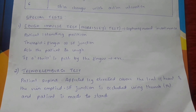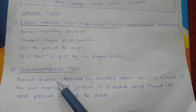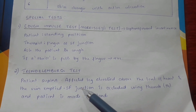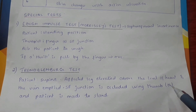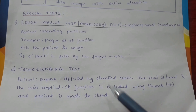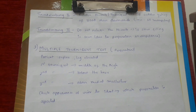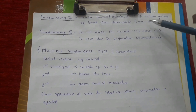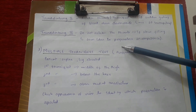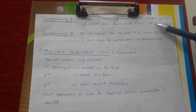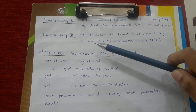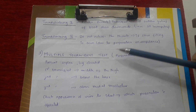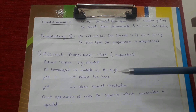The Trendelenburg test: the patient lies in a supine position, the affected leg is elevated above the level of the heart so the vein is emptied, and the saphenofemoral junction is occluded using the therapist's thumb; then the patient is made to stand. Trendelenburg 1: the therapist releases the thumb — if there is sudden gushing of blood from above downwards, the test is positive for saphenofemoral incompetence. Trendelenburg 2: the therapist does not release the thumb, but if slow filling of blood is seen, it indicates perforator incompetence.